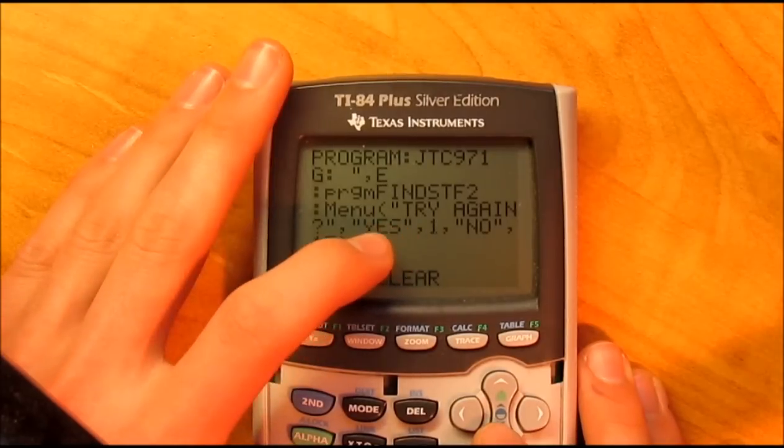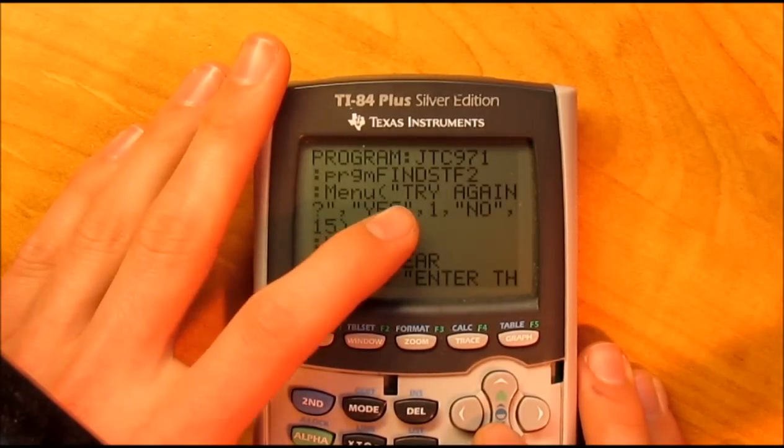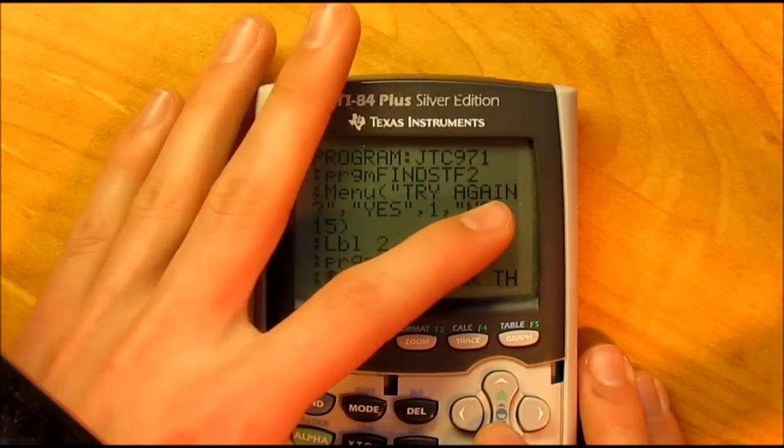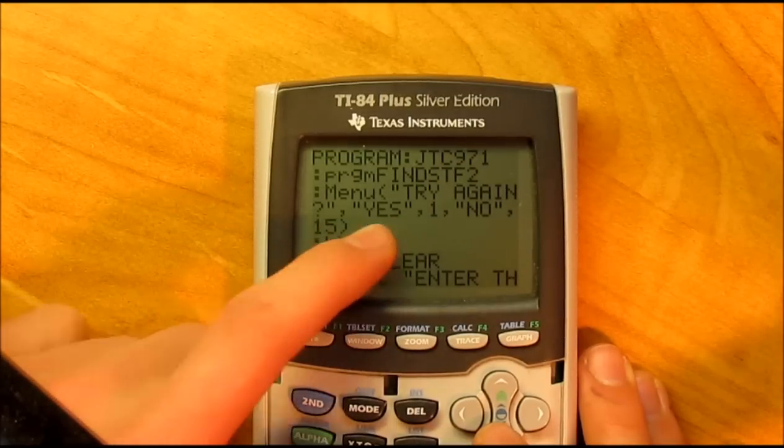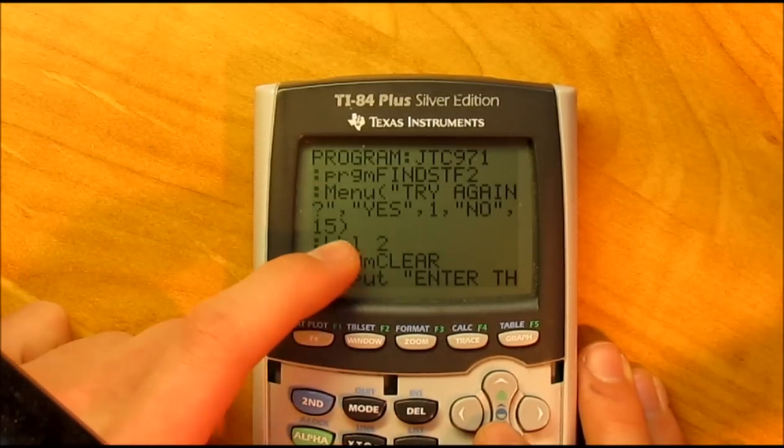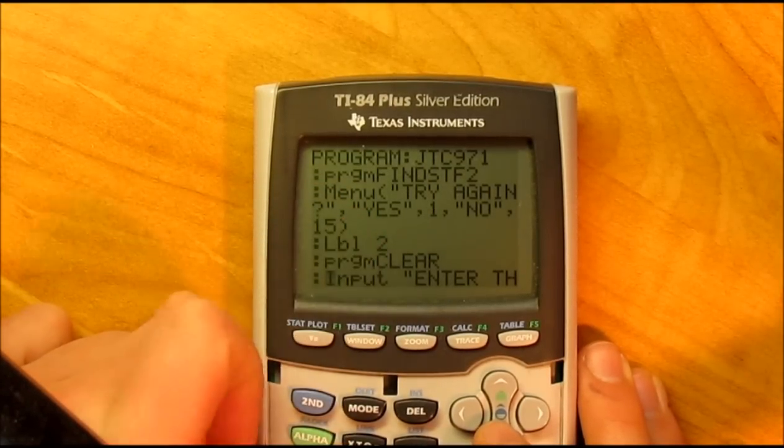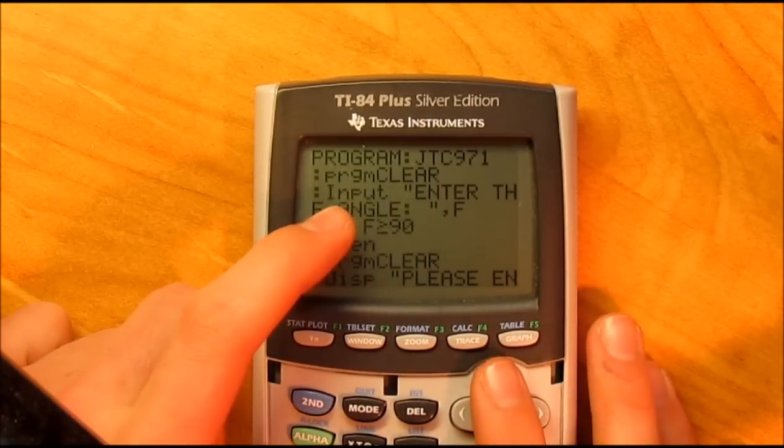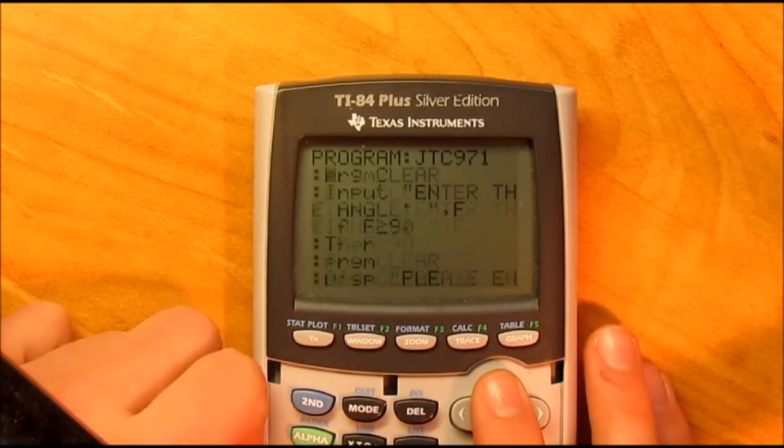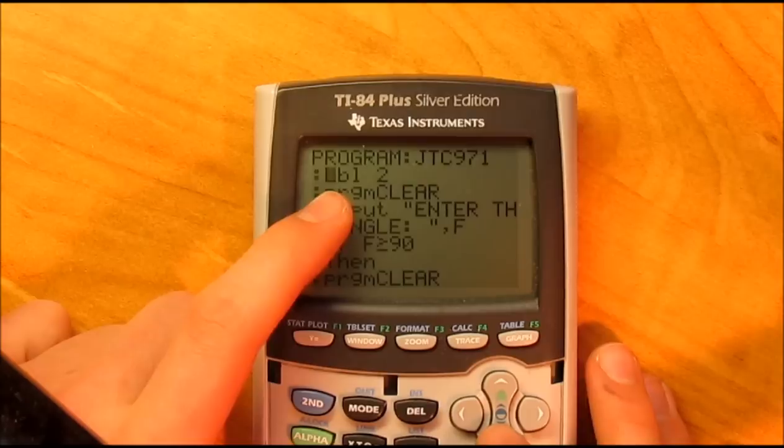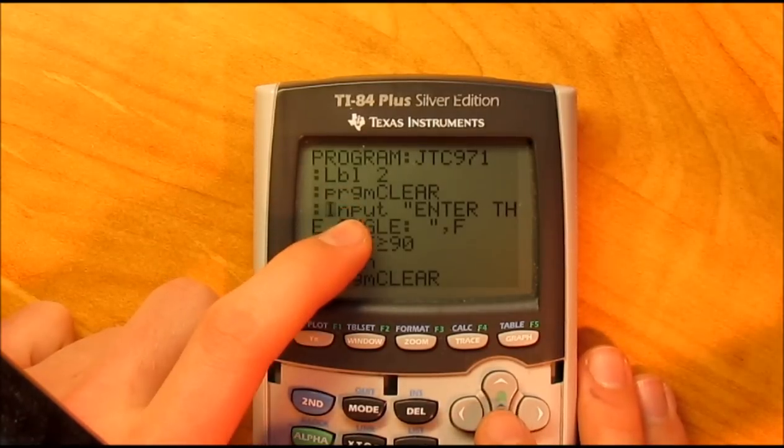Then you come out of program find stuff 2 and then it asks you if you would like to try again, yes, no. That's standard after every mini program. This is the main one. Then you got label 2, so this is if you do know an angle. Run program clear, then input enter the angle.